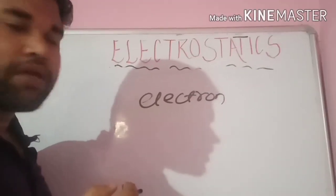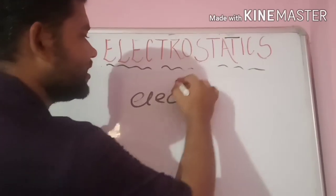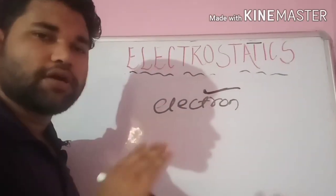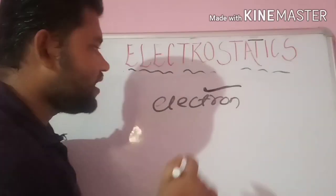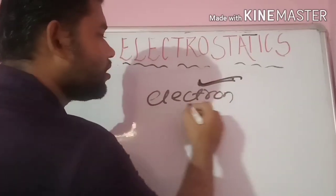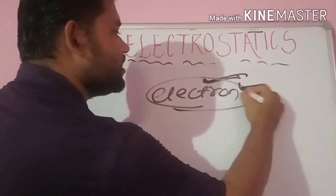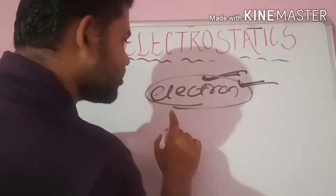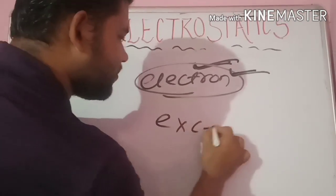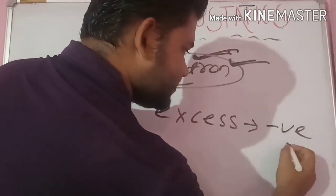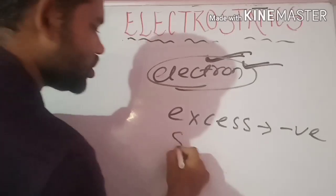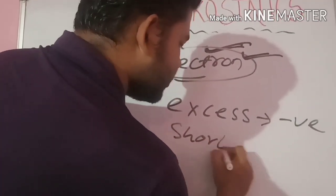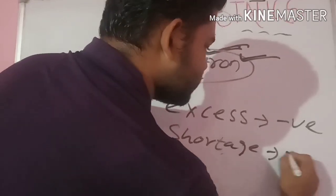Later, it was finally concluded that the electron is responsible for charging. When an electron is in excess amount in a body, then it is negatively charged. When there is a shortage or deficiency of electrons in a body, then it is positively charged.